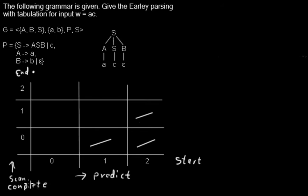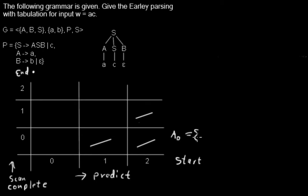Scan and complete are very similar to each other. By scan we are moving the dot over a terminal symbol, and by complete we are moving the dot over a non-terminal symbol. We also have agendas based on the indices: the agenda for the zero line, the agenda for one, and the agenda for items that end at two.